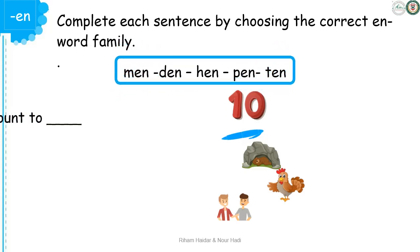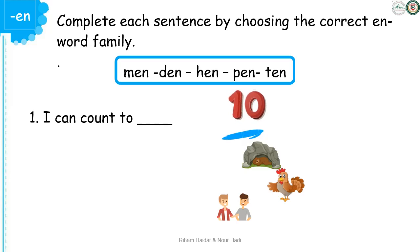Sentence number one: I can count to... Look at this picture and tell me what number is it. Excellent! It's number ten. So the correct EN word family is ten. I can count to ten. Great work!